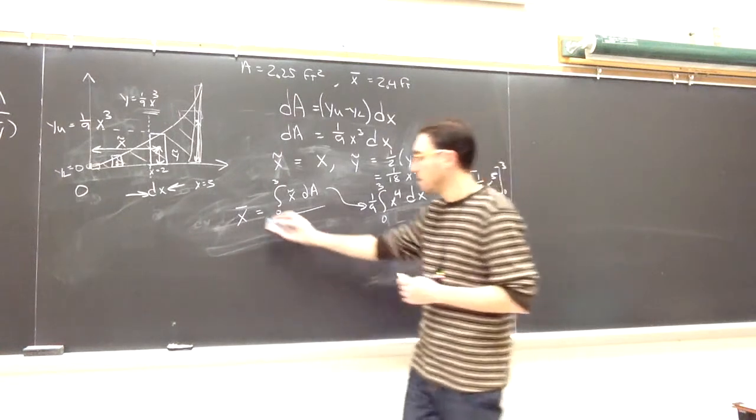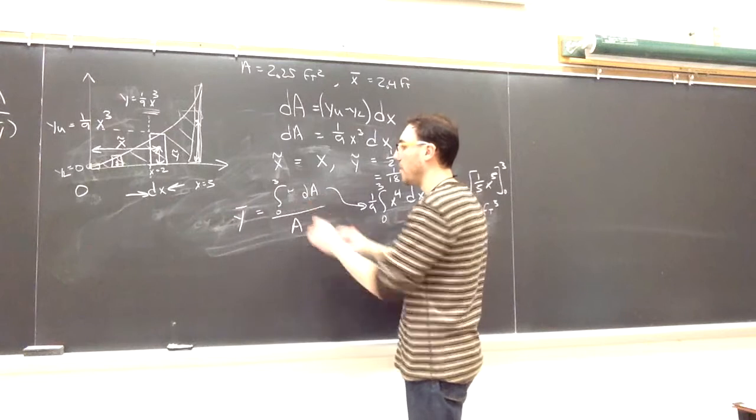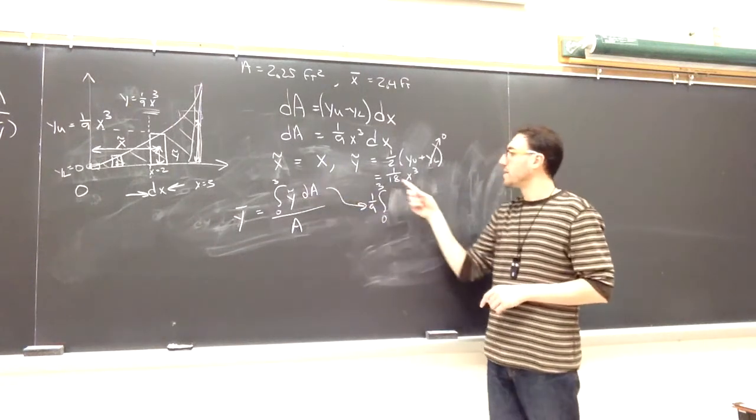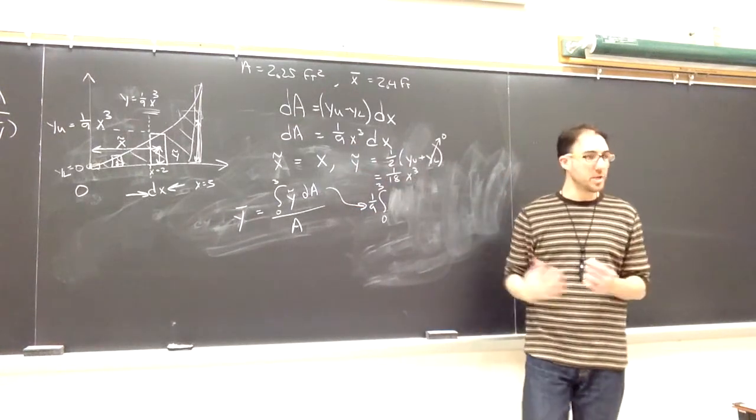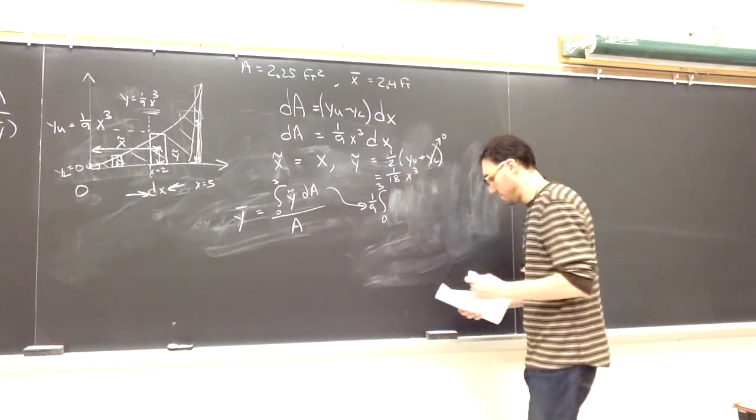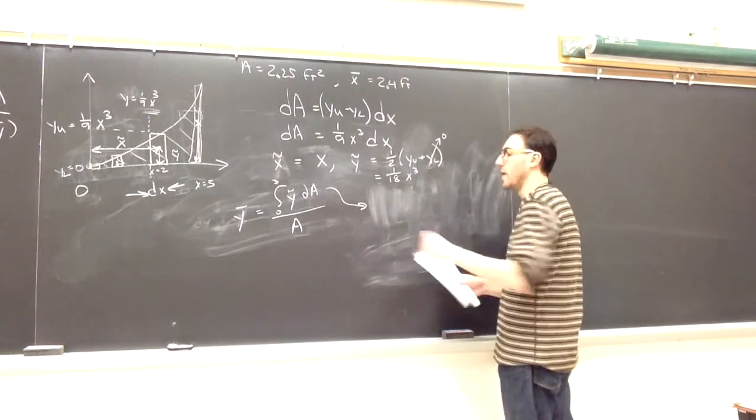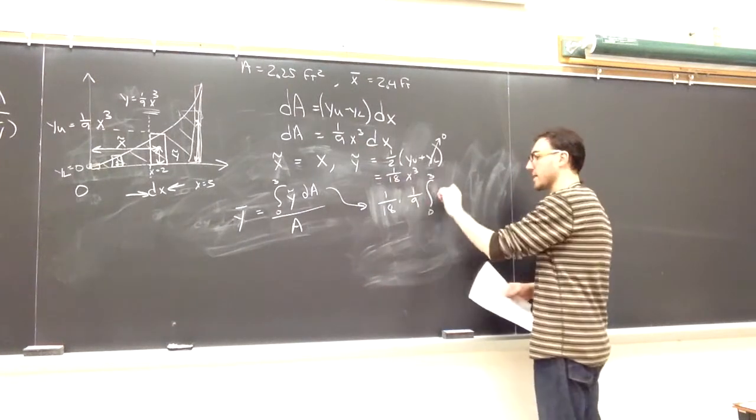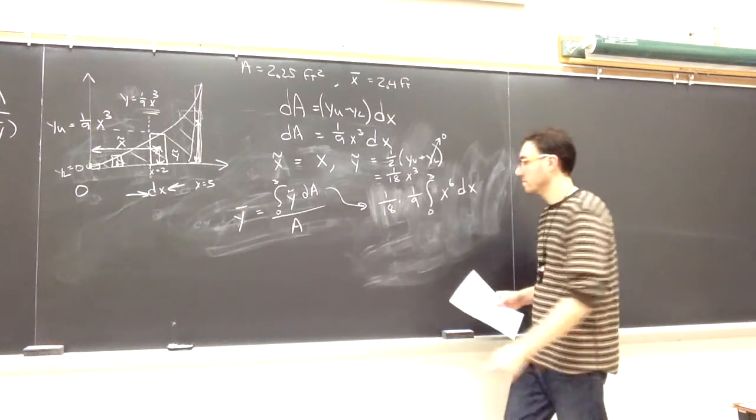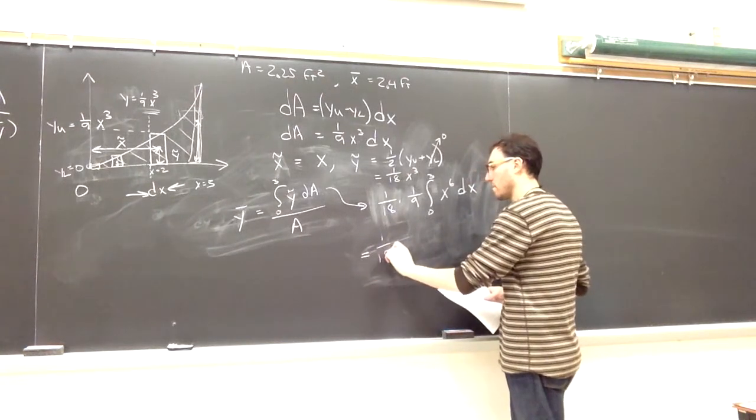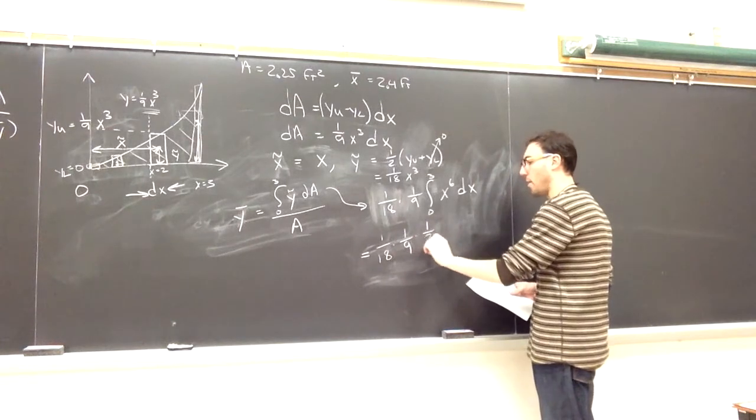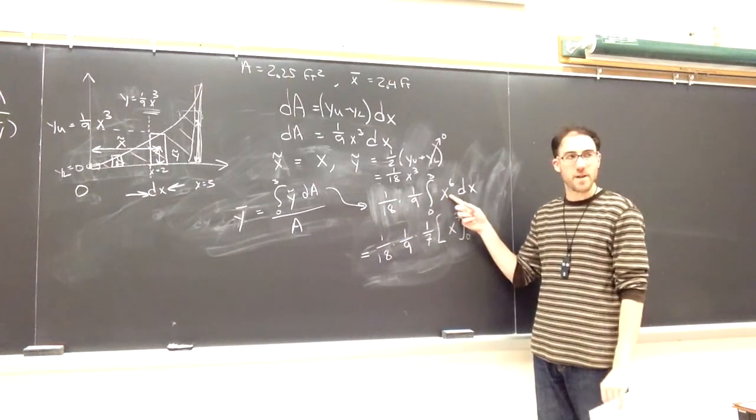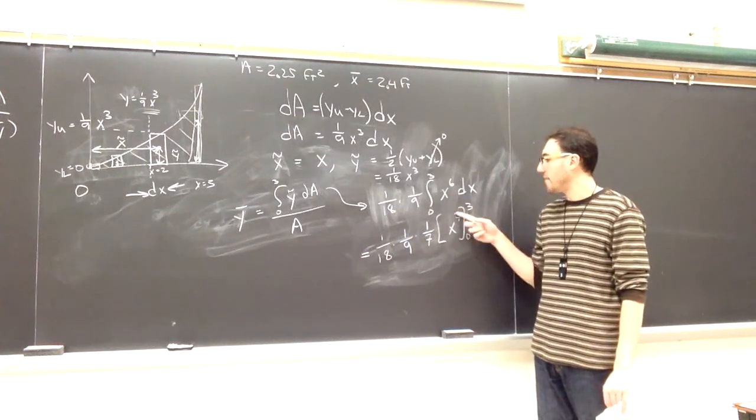All that changes is we're going to multiply y tilde times dA instead. So y tilde we said was one-eighteenth x cubed. dA was one-ninth x cubed. So those two quantities, I want to multiply together. So I can pull out the one-eighteenth, I can pull out the one-ninth. So on the inside I'm left with x cubed times x cubed, which is x to the sixth times dx. I can take this antiderivative. I'll pull out that one-seventh. So the one-eighteenth goes through, the one-ninth comes through. From the antiderivative I get a one-seventh that I pulled out. And then I can evaluate x to the seventh from 0 to 3.